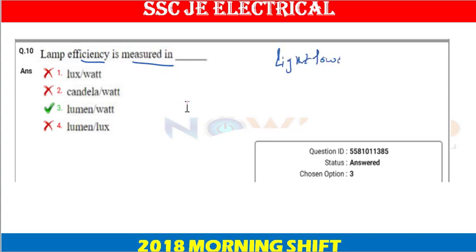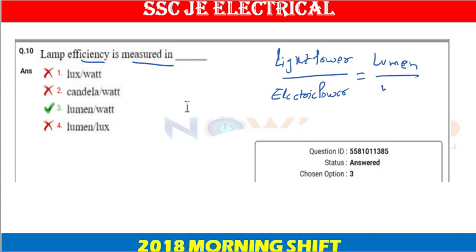Electric power is given in watts. Luminous efficacy — that is luminous flux upon electric power — is given by lumen per watt. The answer is option C.